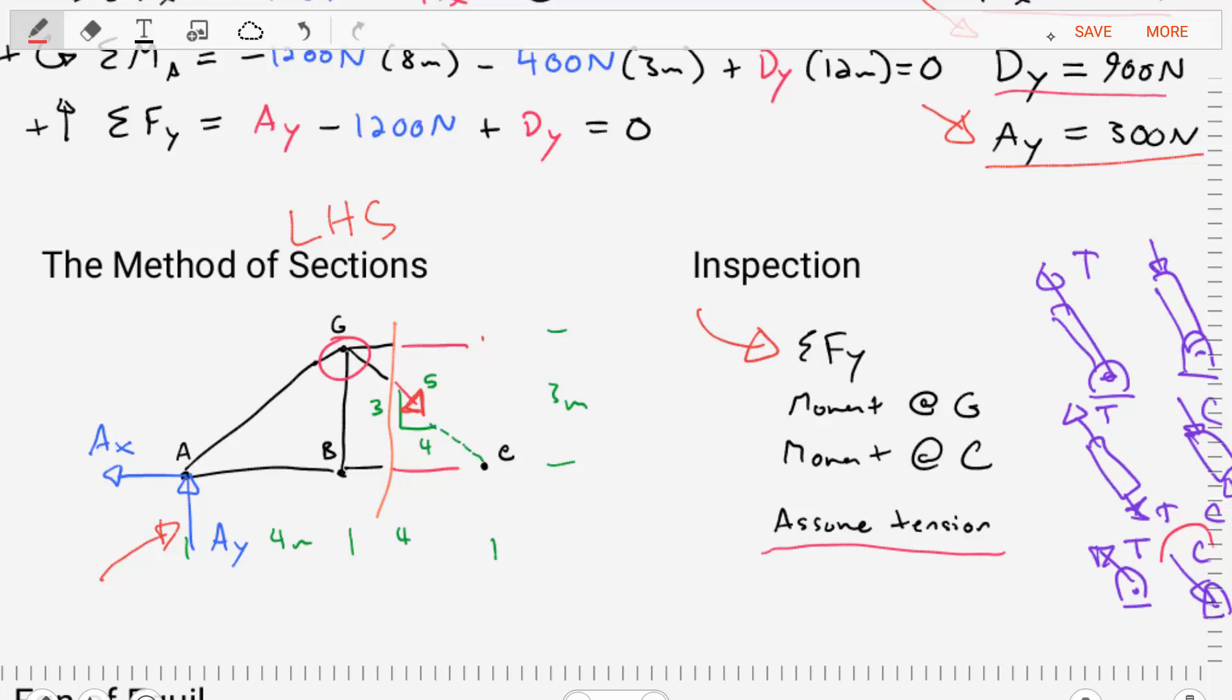I hope all of you are thinking what I'm thinking. It's this member here. This member must have a load going downwards so that we can counteract, we can maintain equilibrium with that AY. Through inspection, we figured that out.